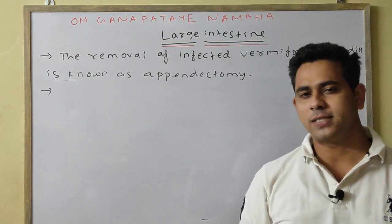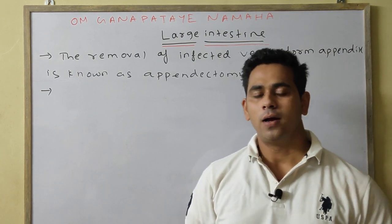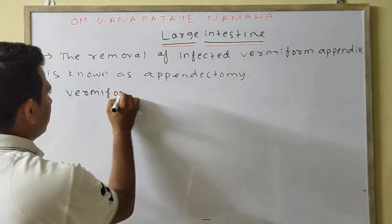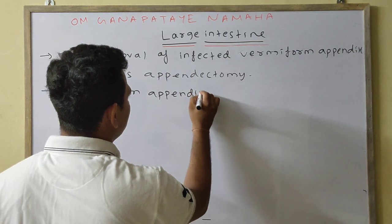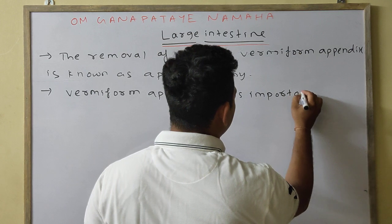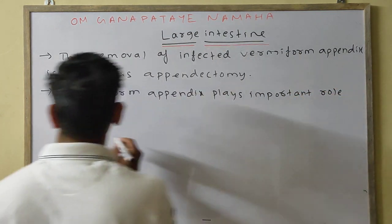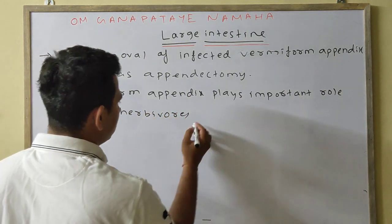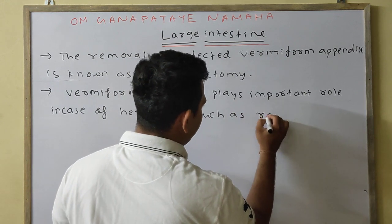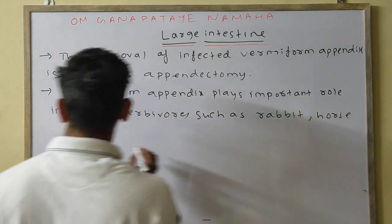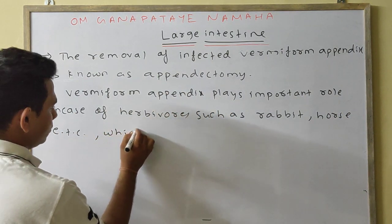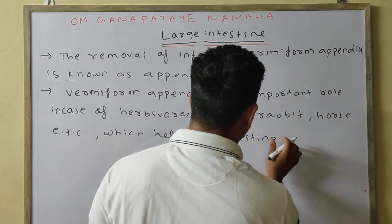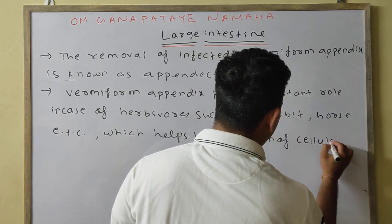The vermiform appendix has an important role in the case of herbivores such as the horse and rabbit. It helps in digesting cellulose.